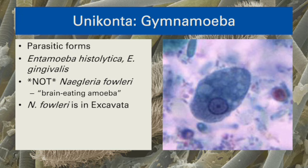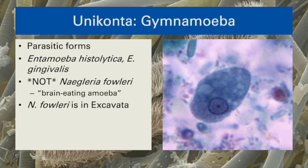Entamoeba histolytica is the causal agent of amoebic dysentery — a protist I've known personally from my experiences living in West Africa. It causes intestinal problems that, left untreated, can lead to dehydration and death. Entamoeba gingivalis is a species endemic to mouths, specifically the gingiva around the teeth. You may have heard of the brain-eating amoeba that proliferates in warm water — that particular one is not an Entamoeba, but rather a member of Excavata.